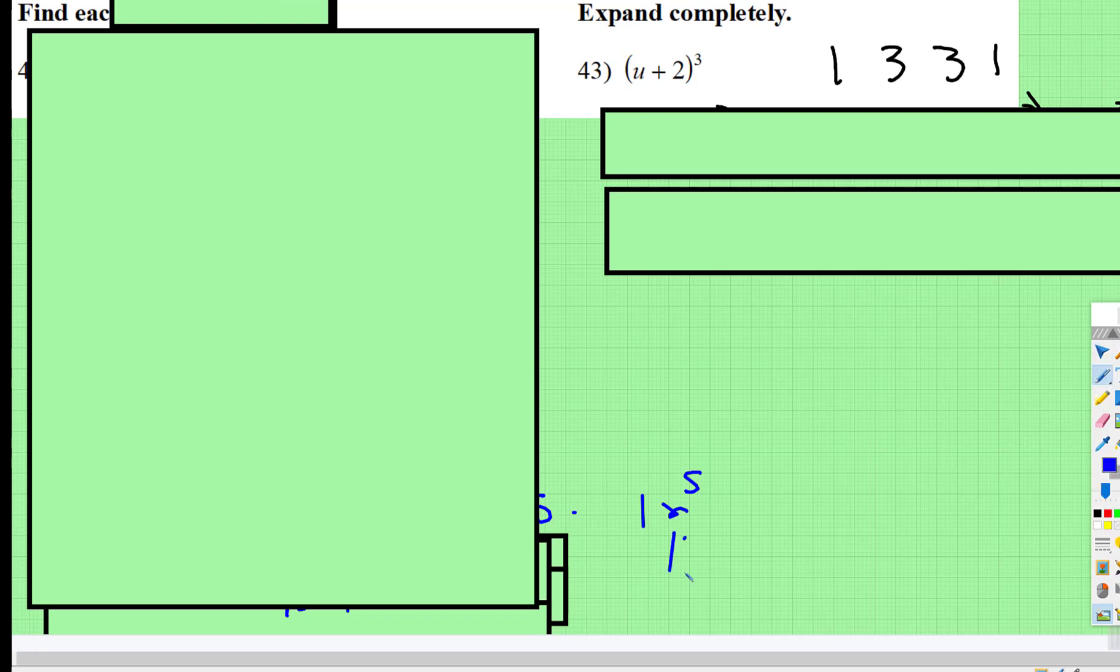If you check in the calculator, 11 cubed is 1,331, so you're good on that front.